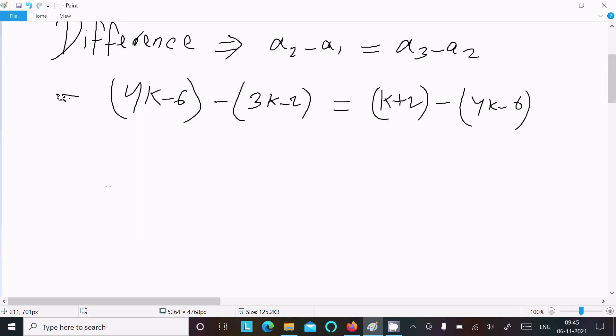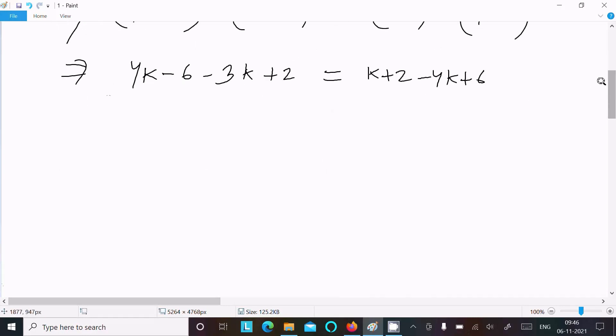Now calculate. Writing here (4k-6) minus (3k-2), and here (k+2) minus (4k-6). Now the next is 4k minus 3k